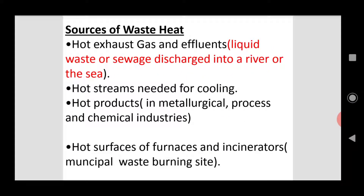What are the sources of waste heat? The sources of waste heat include hot exhaust gas — this results from chemical industries. In some cases, effluents from chemical processes are discharged directly to rivers. What we have to do is reuse these effluents — that is waste heat recovery.